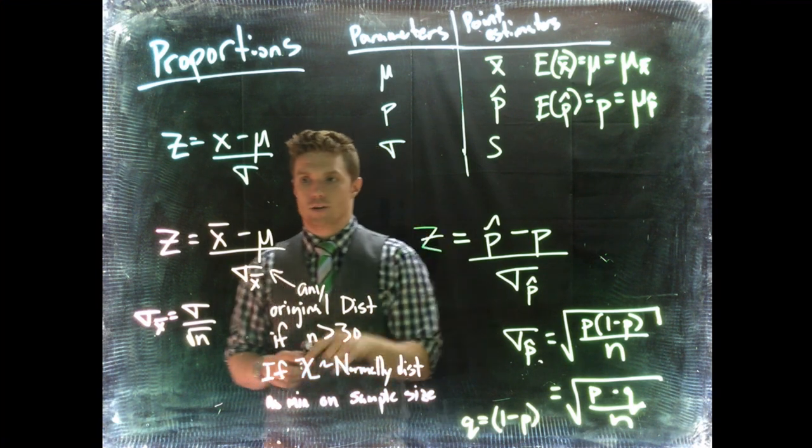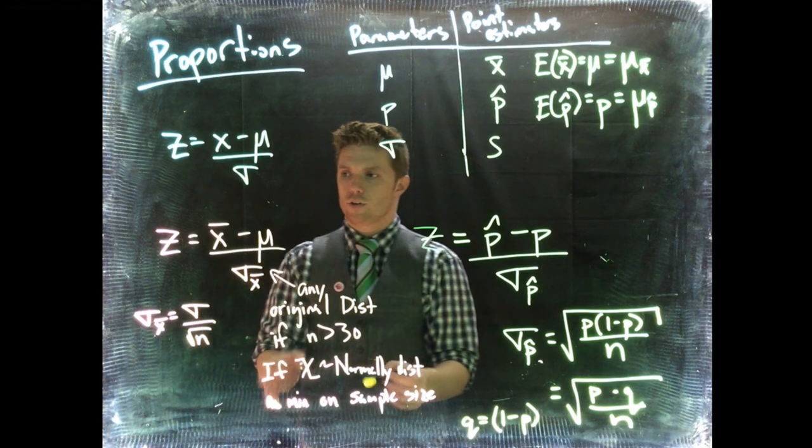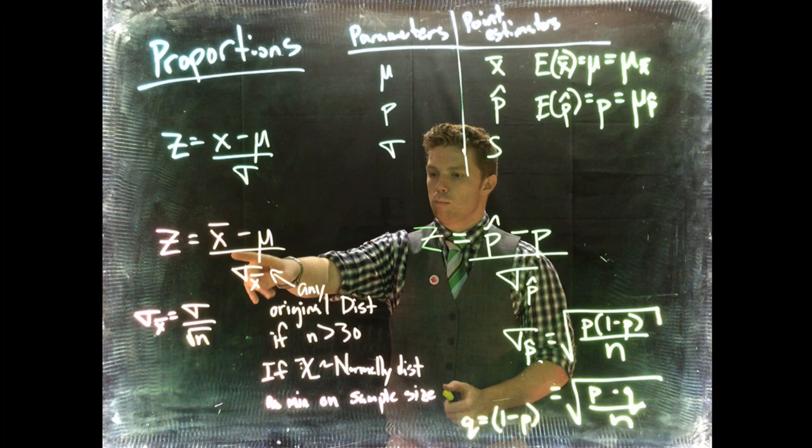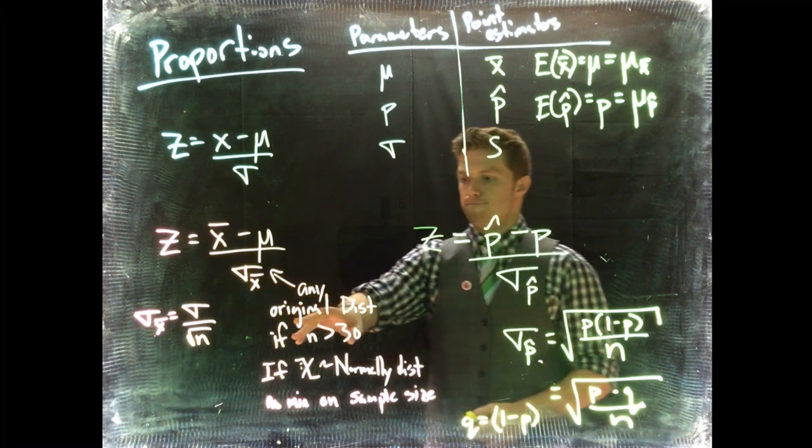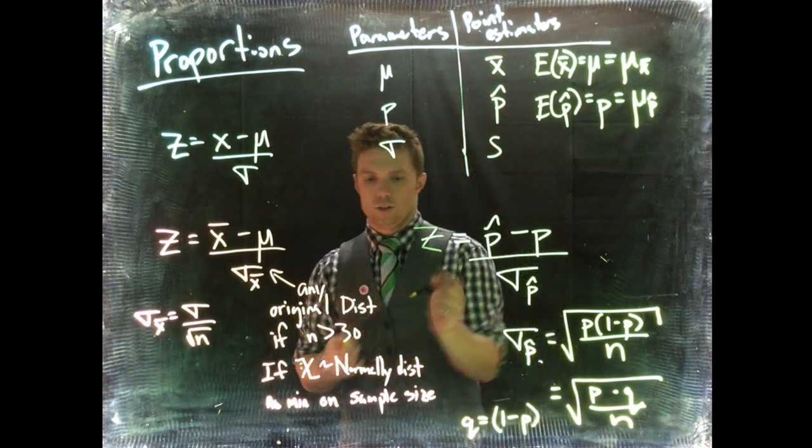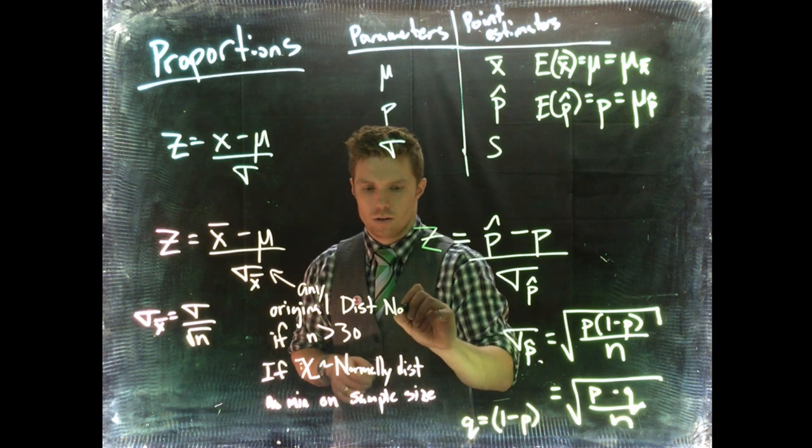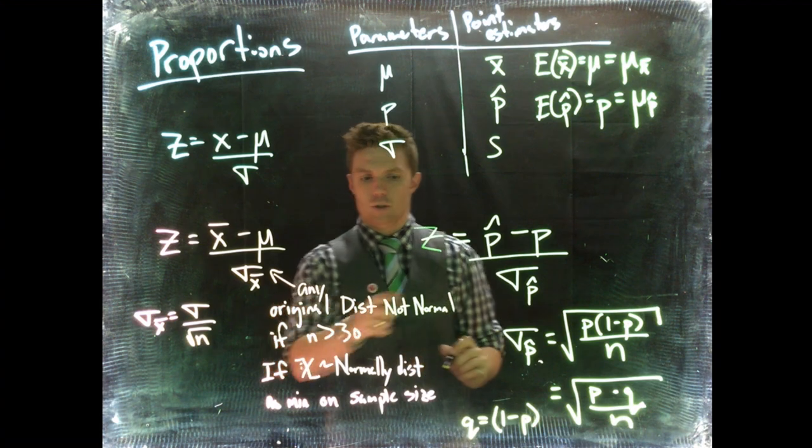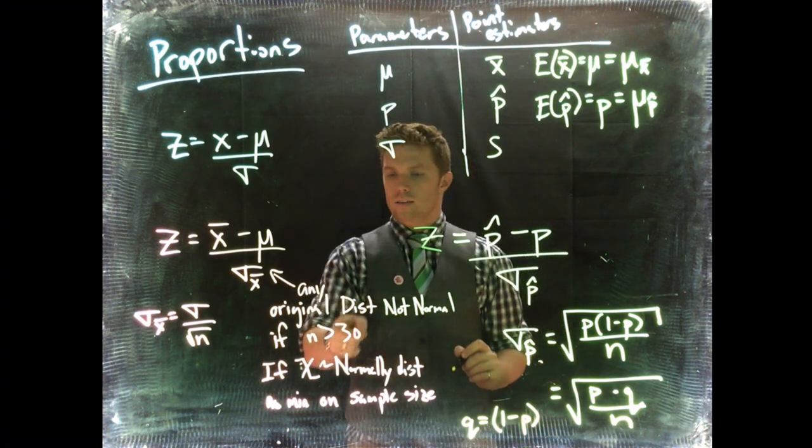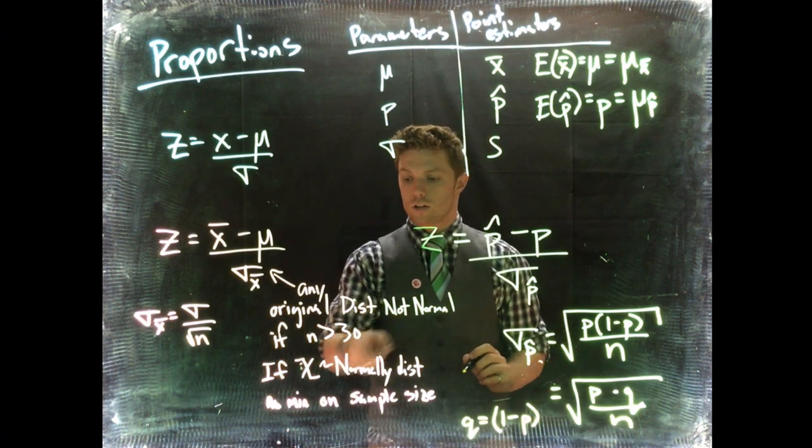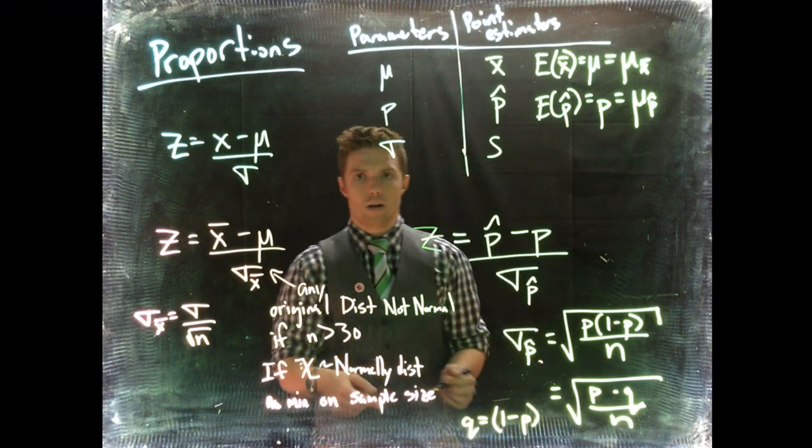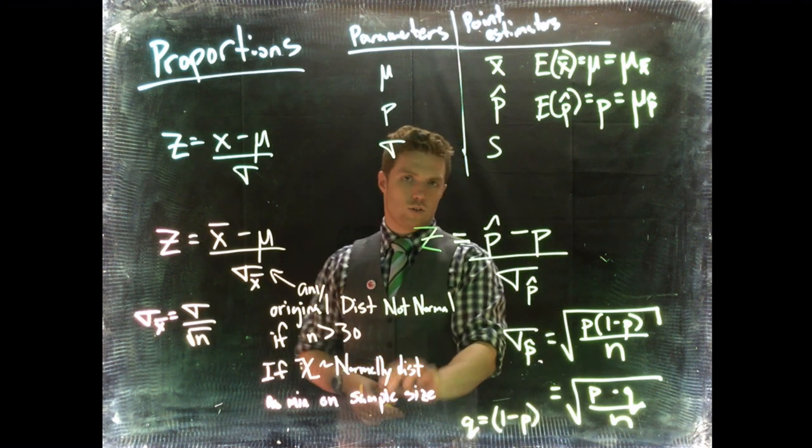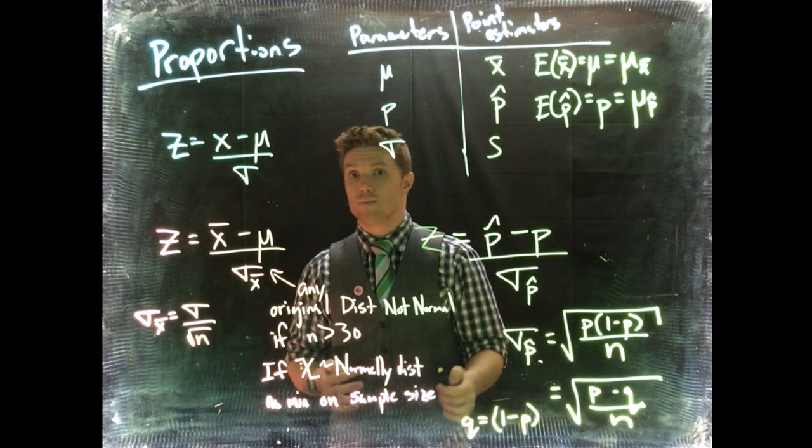There's a caveat though. If the original distribution is not normal, we need a sample size of at least 30 for means. If it is normally distributed, there's no minimum sample size. For proportions, we don't get away with this—we have to have a minimum sample size.